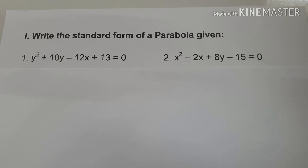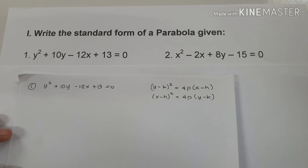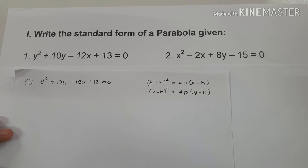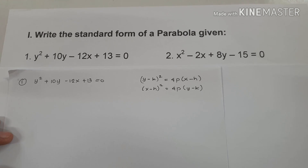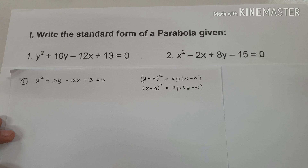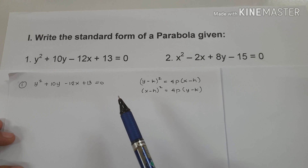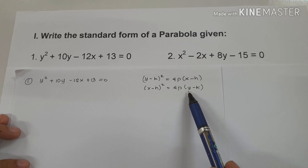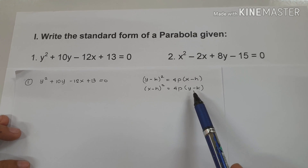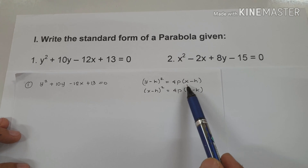In this video, we are going to write the standard form of the equation of a parabola with the given equations. Always remember, when talking about parabolas, we have two kinds of equations. If the parabola opens upward or downward, we use x minus h squared equals 4p times y minus k. If it opens to the right or to the left, we use y minus k squared equals 4p times x minus h.